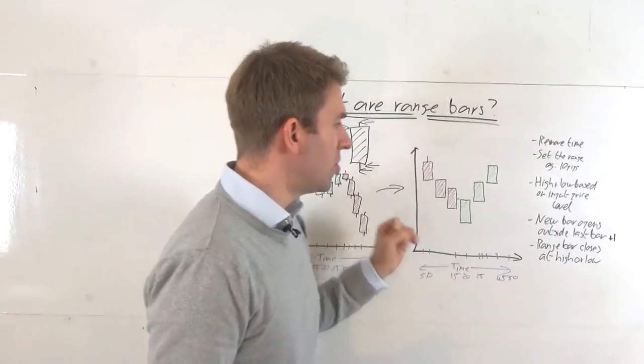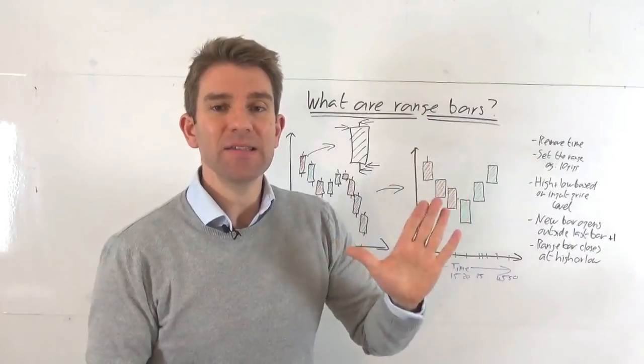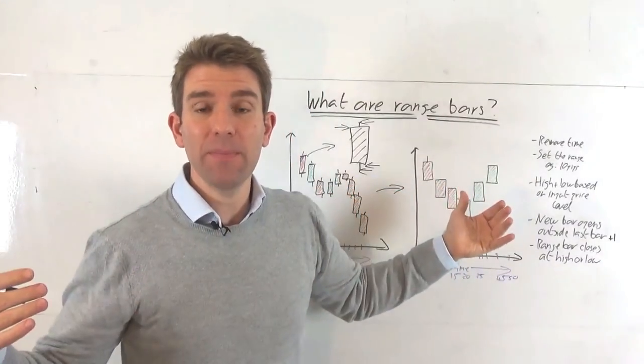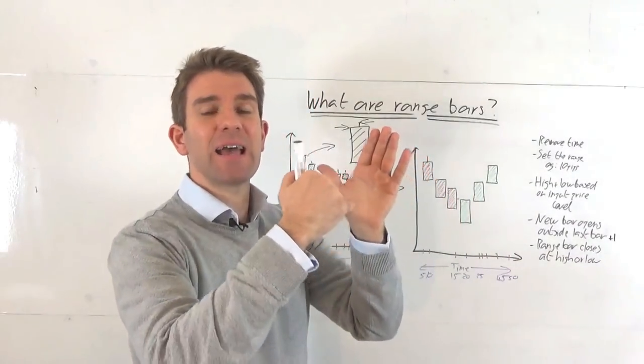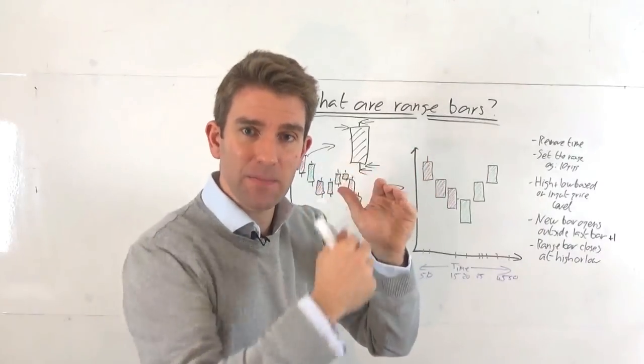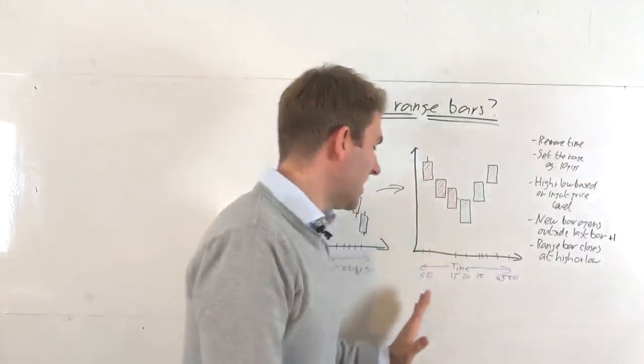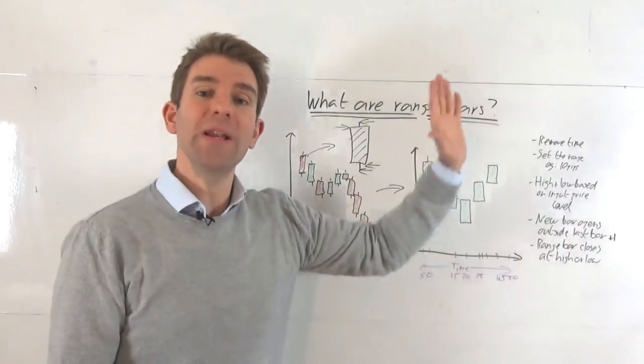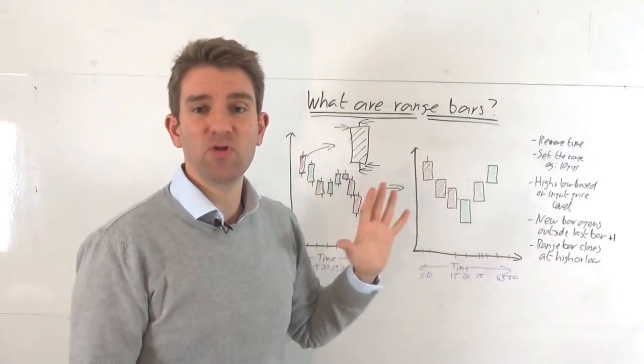And so what happens is this: a new bar will start and it won't end until the range in that time period, whatever the time period may be, is over 10 pips. So 10 pips, it will print the candle. The next candle only prints when you've had 10 pips move. Now, the interesting thing about that, why it removes time, is that that could take an hour, that could take a second. So you eliminate time from things immediately and you start to just put in the range of the instrument.